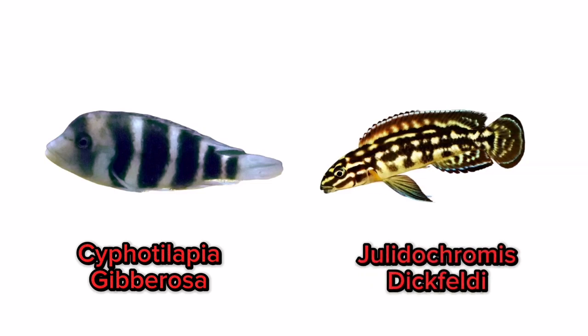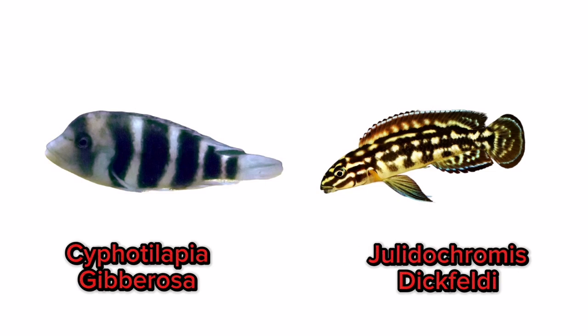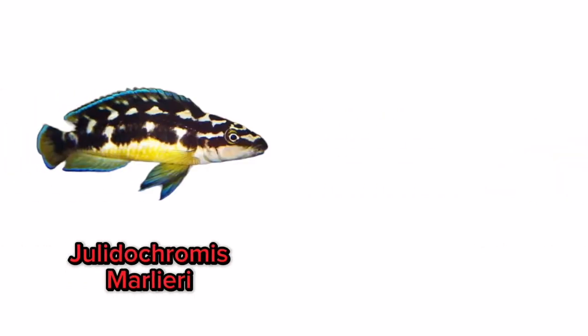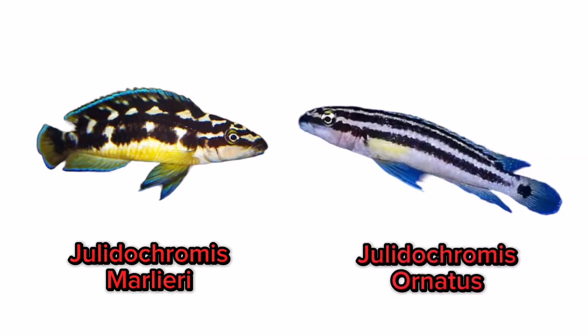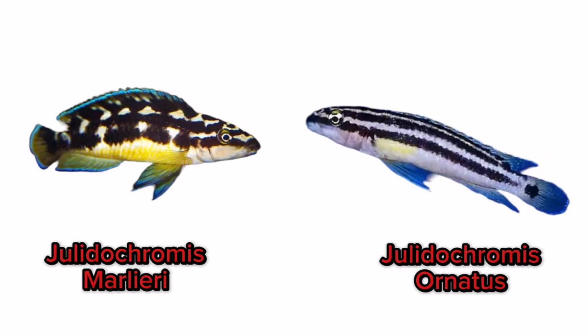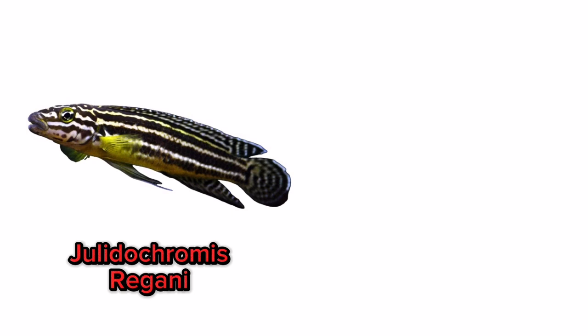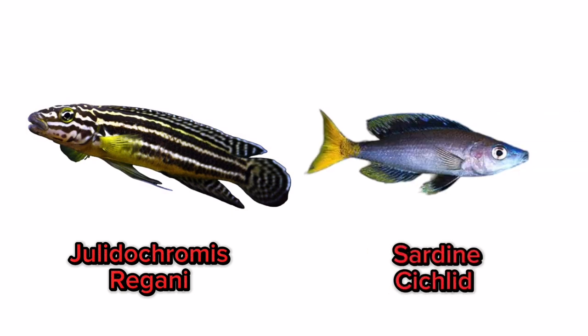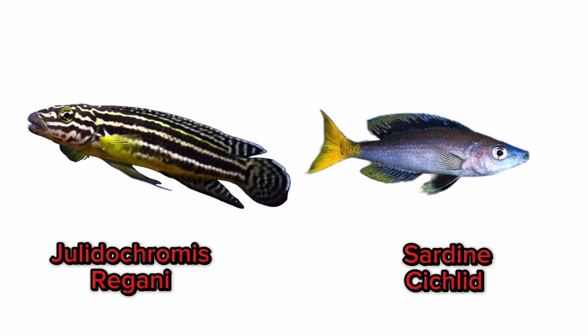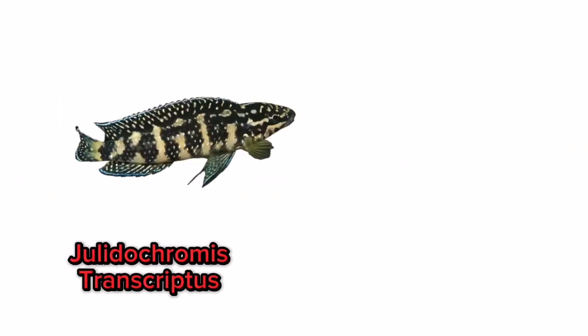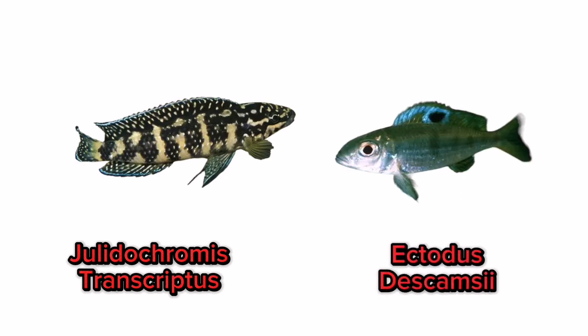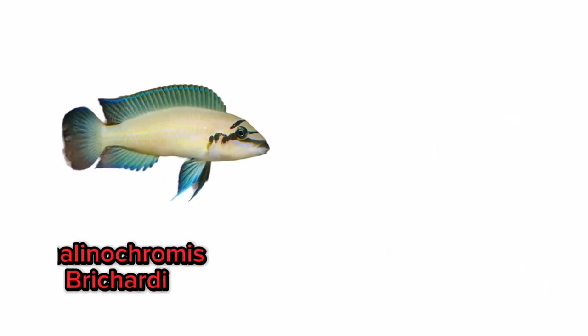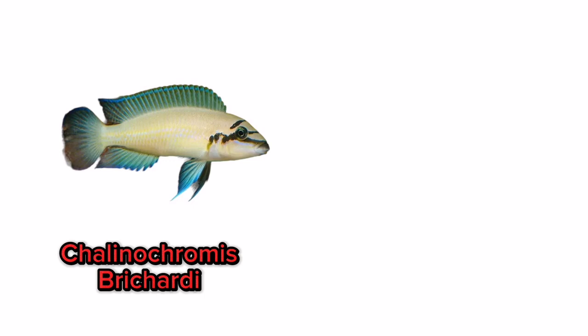Julidochromis dickfeldi. Julidochromis marlieri. Julidochromis ornatus. Julidochromis regani. Sardine Cichlid. Julidochromis transcriptus. Ectodus descampsii.